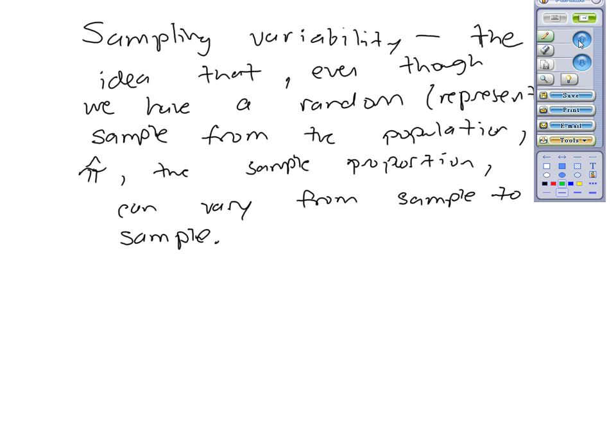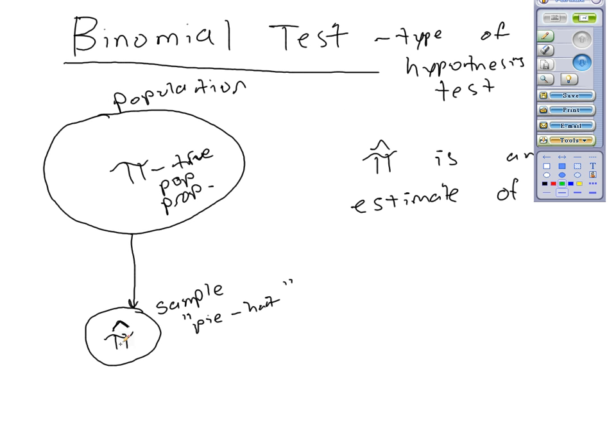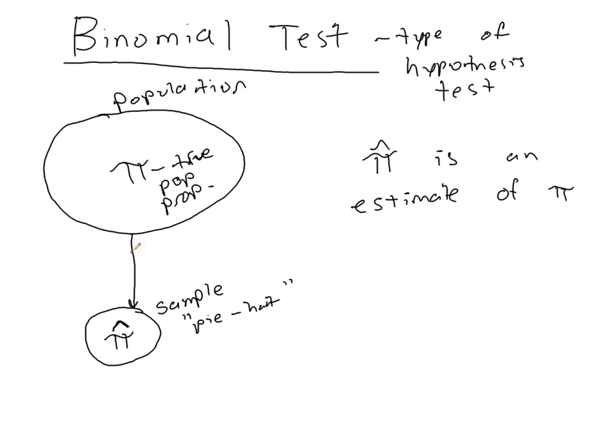So we face the dilemma that, yes, in this sample that we collect, so let's just say that you have pi in reality, which we don't know. Let's just say you had 0.5, a population proportion of 0.5.